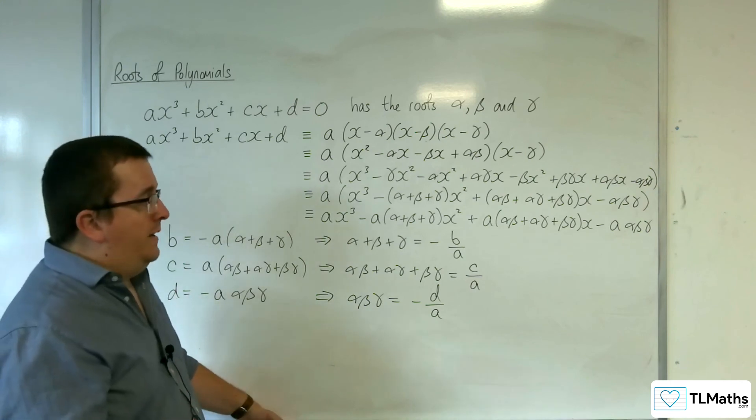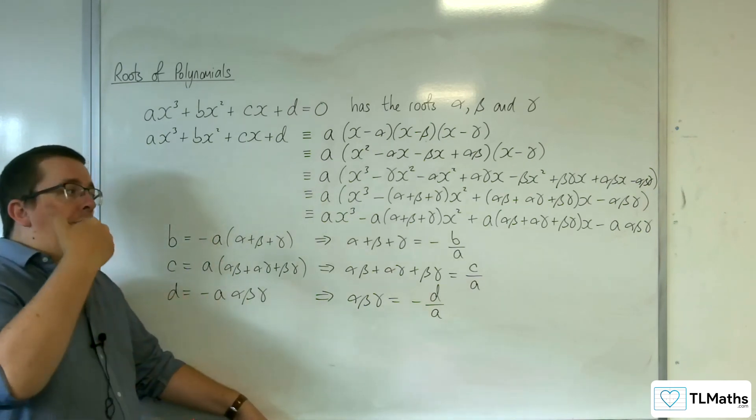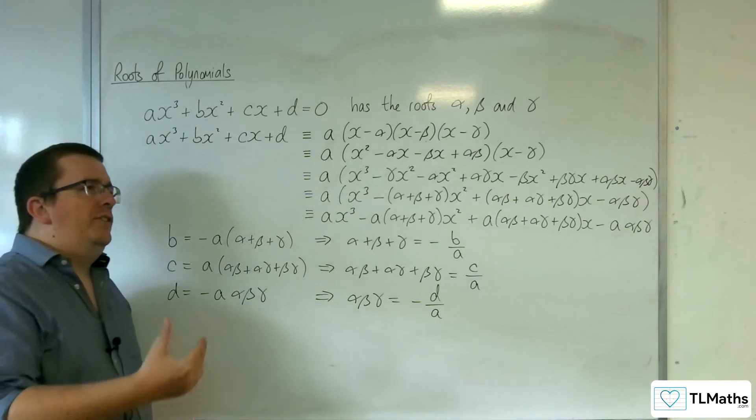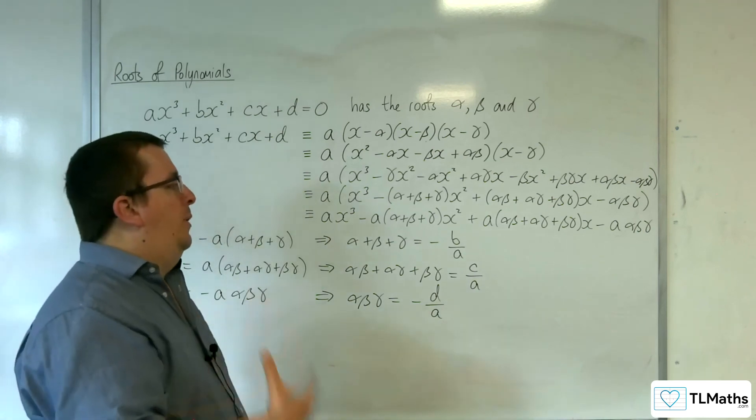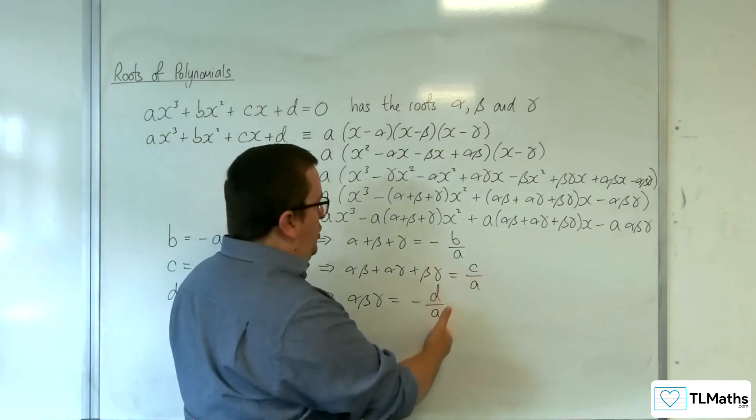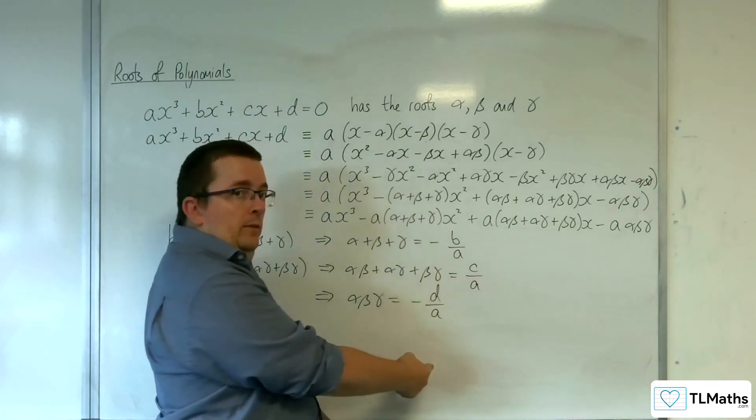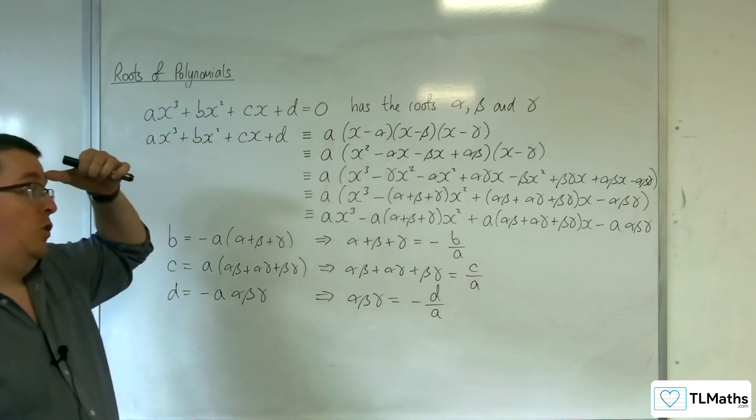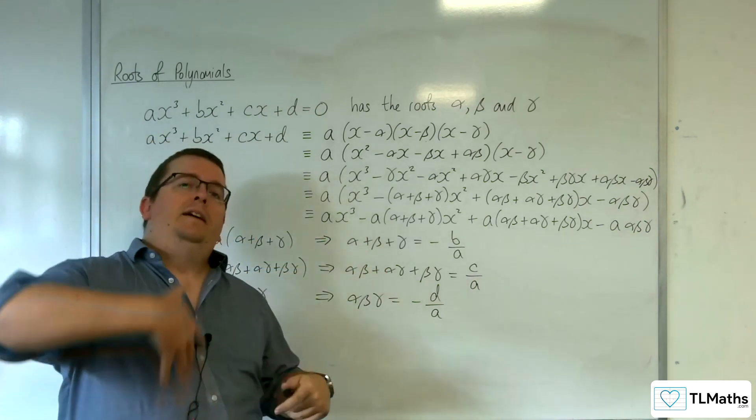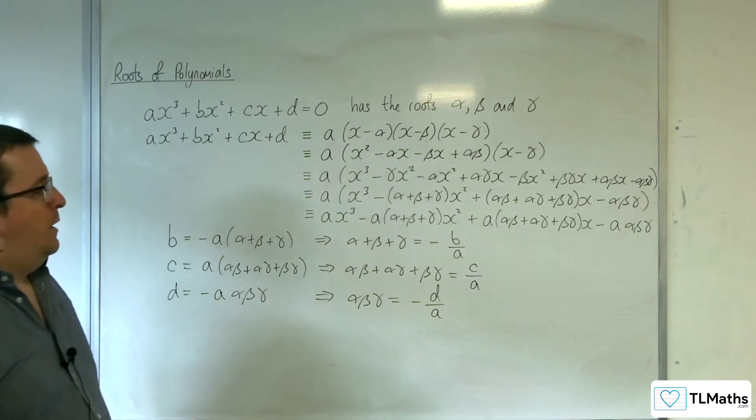When we had the quadratic, the sum of the roots α + β was -b/a, and the product of the roots was +c/a. Each time you introduce - so when we go to quartic, you'll have minus, plus, minus, plus as you work your way down. You can see that these formulas get more complicated as the order of the polynomial increases.